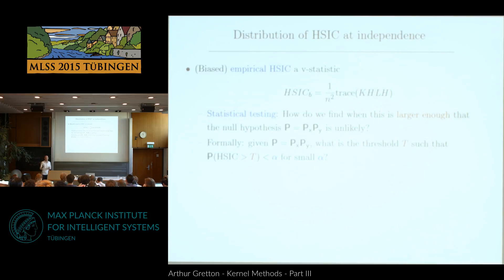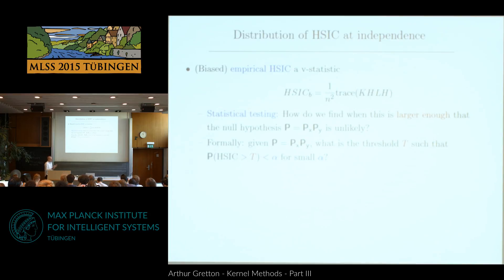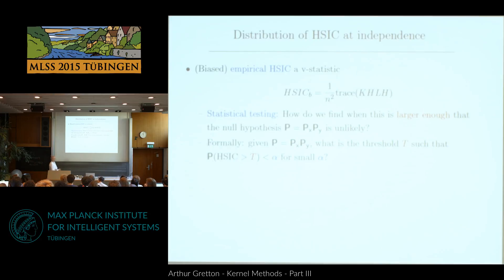Here is our statistic. Written slightly differently to the earlier notation, but modulo a centering operation — this H matrix here — it's the dot product between the kernel matrix of all similarities in one view and the kernel matrix of all similarities in the other view. For example, if I have images and associated captions, this is the kernel between all image pairs, and this is the kernel between all caption pairs. I take the dot product between those two kernels, and if this dot product is large, I conclude that the images and captions are dependent.